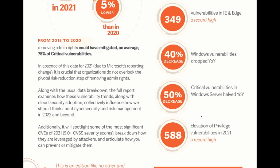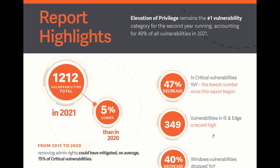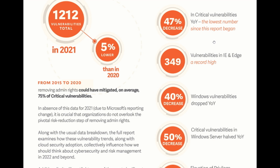Looking at some other percentages and statistics, they report a 47% decrease in critical vulnerabilities — the lowest number since the report began, marking the lowest ever total since they started carrying out these reports. They also found 349 vulnerabilities in the Internet Explorer and Edge web browsers, which was a record high for 2021, roughly four times higher than in 2020.